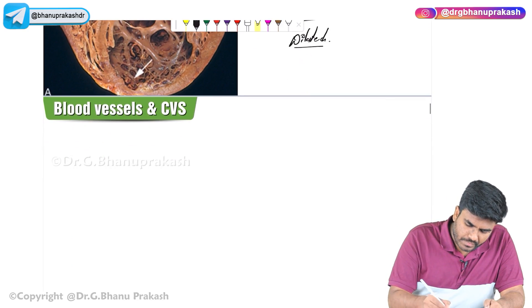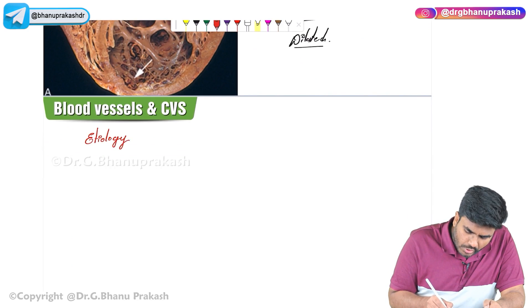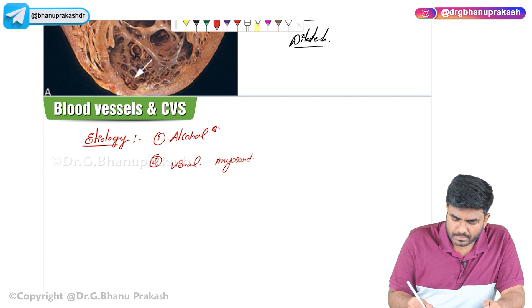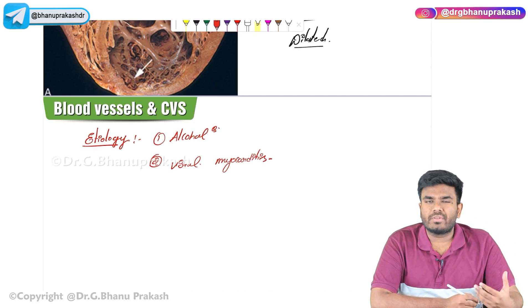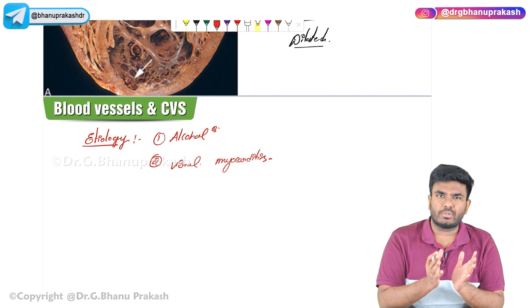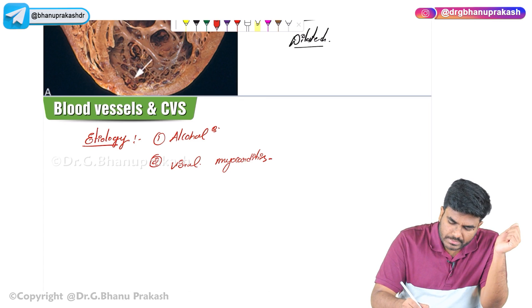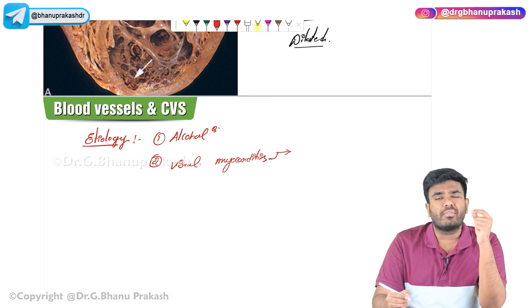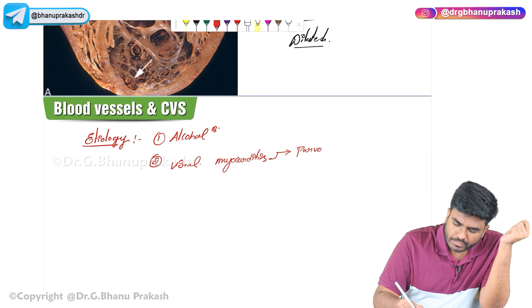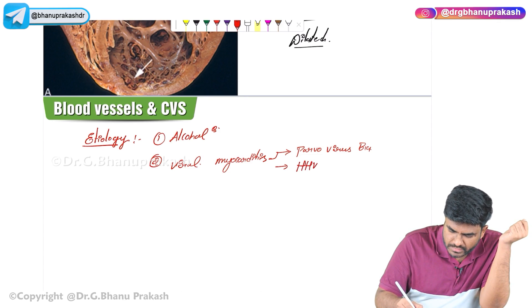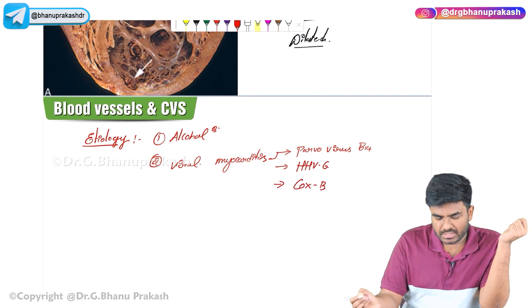What is the etiology of dilated cardiomyopathy? The number one reason is alcohol — this was a previously asked exam question. Other reasons include viral myocarditis, which is infection of the myocardium. The myocardium becomes inflamed and does not contract properly, leading to a pumping defect and congestion, causing chamber dilation. The viruses most commonly associated with viral myocarditis are Parvovirus B19, HHV6, and Coxsackie B virus.